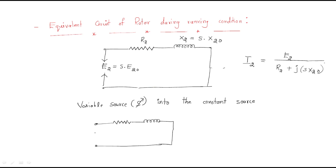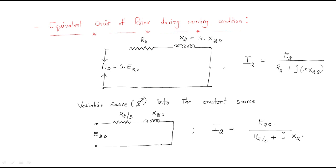After dividing by s, the equivalent circuit becomes: E2-naught as the source, R2 becomes R2/s, and the reactance becomes X2-naught. So the total current is: I2 = E2-naught / (R2/s + j·X2-naught). This is the modification of the equivalent circuit.